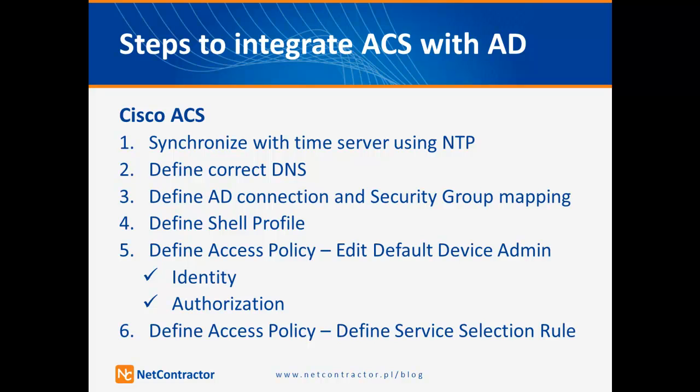Here are six main tasks that need to be done at Cisco ACS. The same as with Microsoft Active Directory server, you have to synchronize ACS with a time server using NTP. Keep in mind that if ACS and Active Directory are not properly synchronized and have a five-second difference in time, then ACS will not be able to establish a connection to Active Directory and you will get an error.